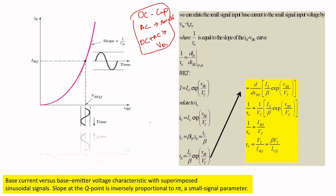Looking at the graph, the x-axis is vbe — total instantaneous (small v, capital B), which is a combination of AC and DC. The y-axis is ib, also a combination of AC and DC. The IBQ is your operating point. The signal swings up and down around it. The slope of ib versus vbe gives 1/r_pi, where r_pi is the small signal resistance with respect to the AC signal.